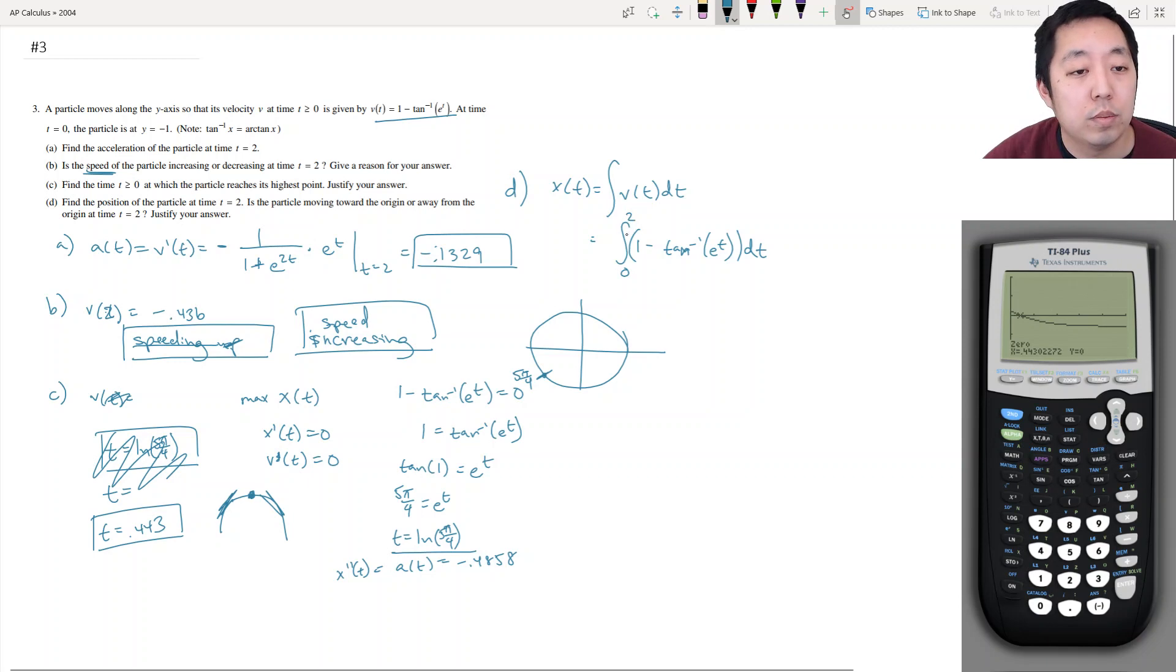Because that's time t equals 2. And at time t equals 0, it starts at negative 1. So I need to add, I need to subtract 1. Because this is sort of its change in position. And here's where it starts at. Because it started at negative 1. So we just need to compute this integral here. Math 9. Function integral. 1 minus tan inverse of e to the x. Integrating over x. We're integrating from 0 to 2. And then we're going to subtract 1. So this computation ends up being negative 1.36. So that's location. That's its position.